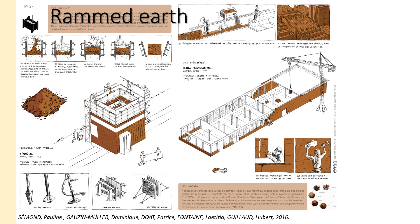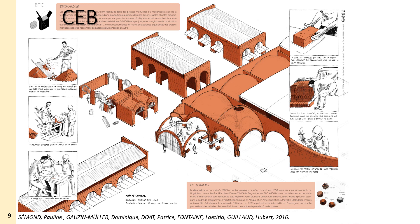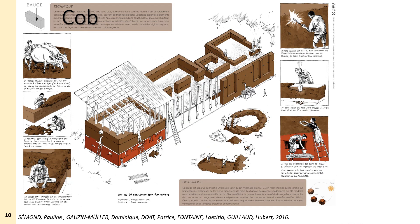For rammed earth, you take the earth at its optimal water content — basically the optimal Proctor water content — place it in formwork, compact it with a ram, then remove the formwork to obtain a monolithic wall. For compressed earth blocks, the water content is similar but compaction is done in a press to make bricks, which are then laid with mortar to form a masonry wall. The manufacture water content for rammed earth and CEB is approximately 8 to 12 percent.